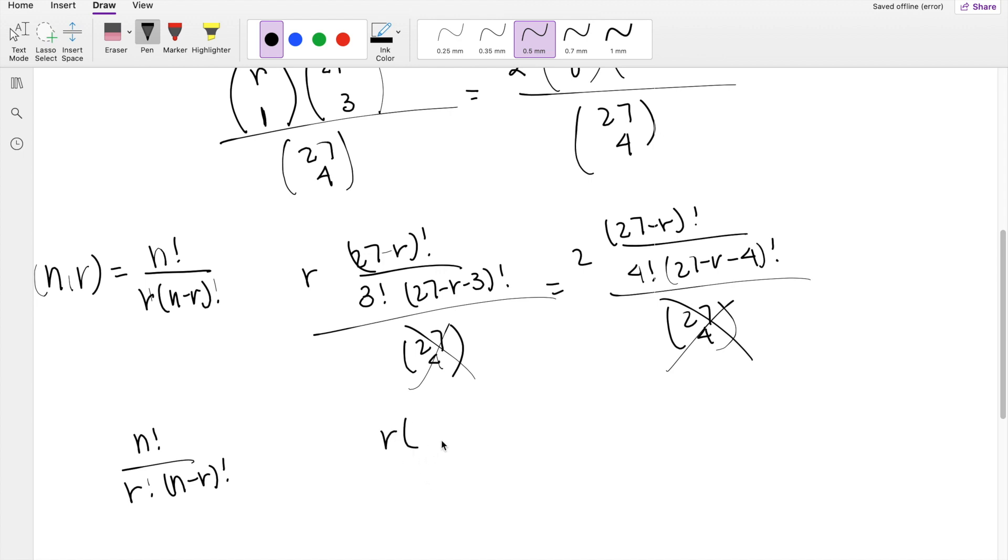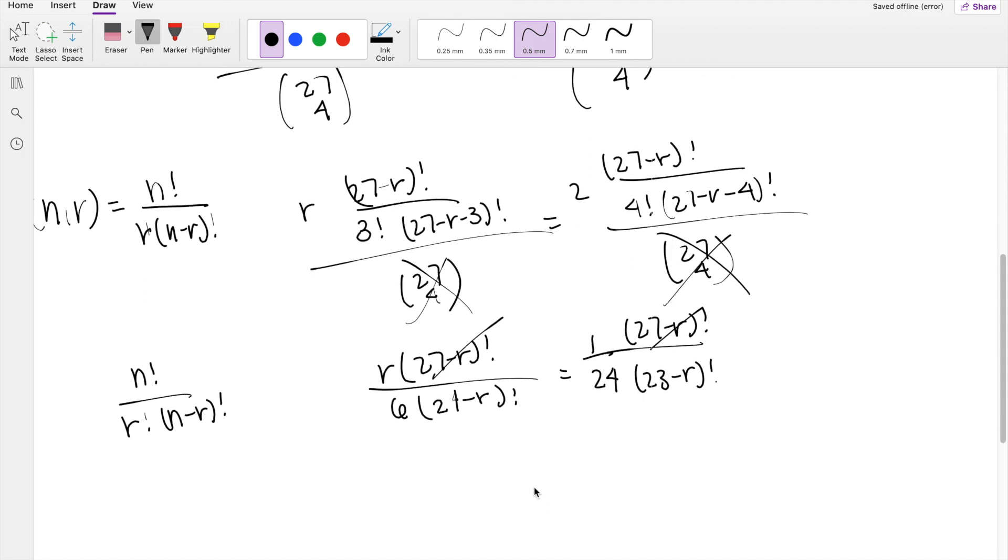So you're left with R, 27 minus R factorial divided by 3 factorial, which is 6, times 24 minus R factorial is equal to, 4 factorial is 24, so that's 1 over 24. The numerator is still the same, 27 minus R factorial. The denominator here is going to be 23 minus R factorial. So then 27 minus R factorial actually just cancels out. So you're left with R over 6, 24 minus R factorial is equal to 1 over 24, 23 minus R factorial.